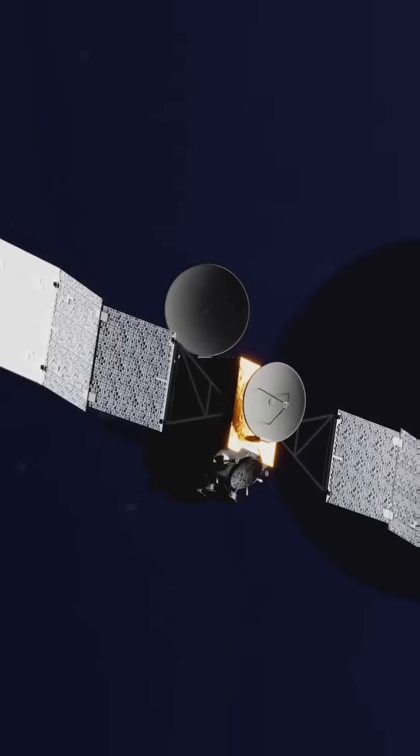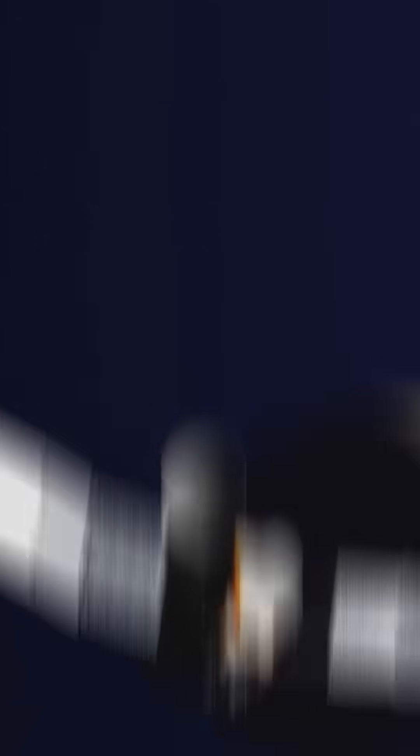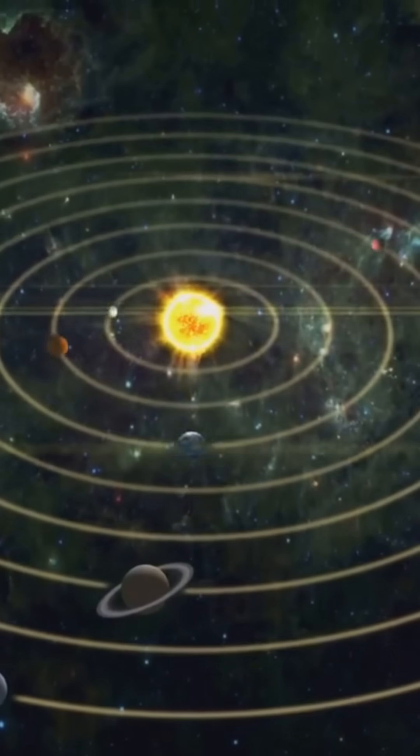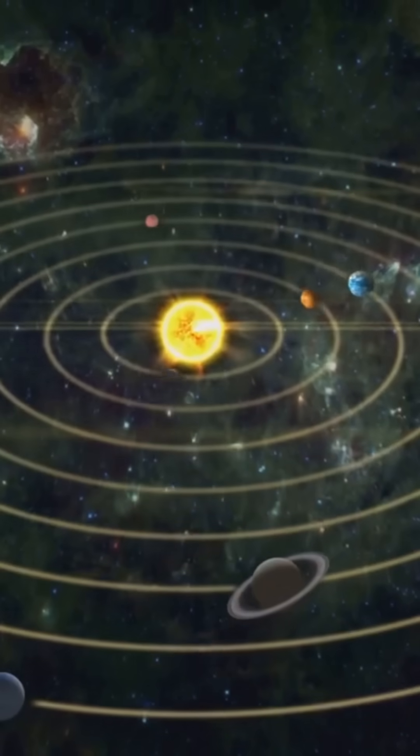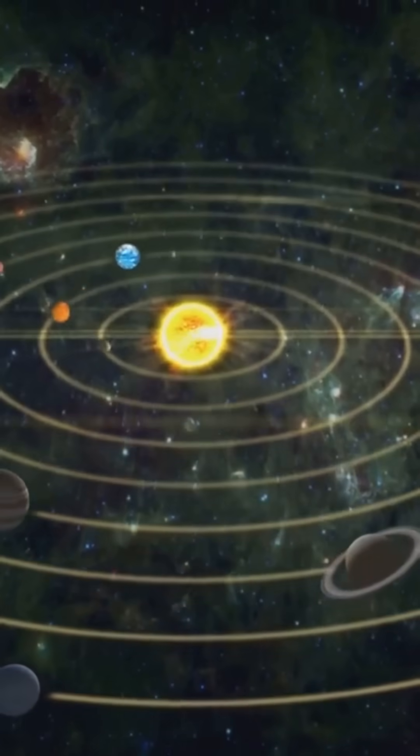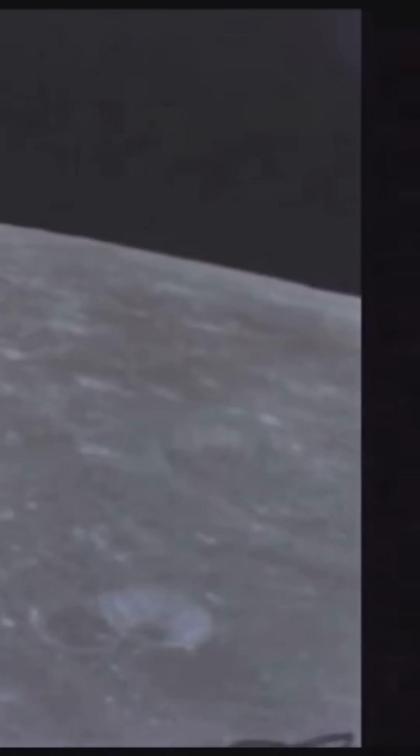Why does this matter? Because orbital mechanics depend on these two points. Satellites speed up at perigee and slow down at apogee, crucial for tasks like satellite imaging, GPS timing, and planning interplanetary missions. The Apollo missions used apogee and perigee control to slingshot around the moon and return safely.